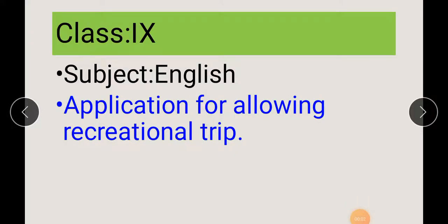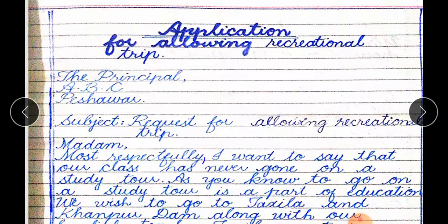Bismillah. Assalamu Alaikum students. This lesson is for Class 9 subject English students. Our topic is application for allowing recreational trip. You may have written applications before, but for this application you need to follow this pattern. Whenever you write an application, you will follow this pattern.